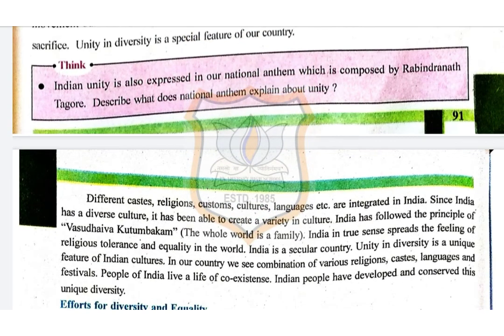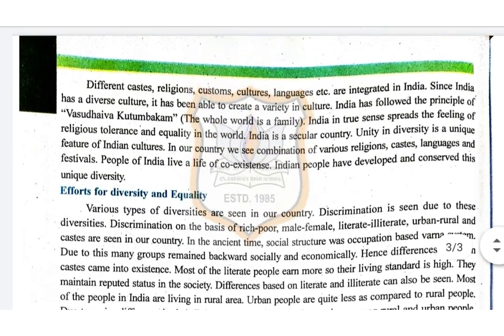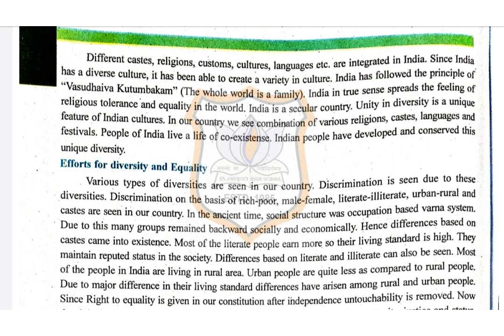Different caste, religion, customs, cultures, languages etc. are integrated in India. Since India has a diverse culture, it has been able to create a variety in culture. India has followed the principle of Vasudhaiva Kutumbakam — the whole world is a family. India in true sense has spread the feeling of religious tolerance and equality in the world. India is a secular country. Unity in diversity is a unique feature of Indian culture.